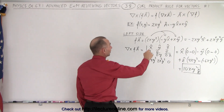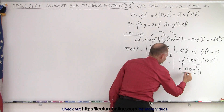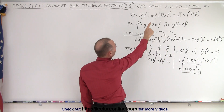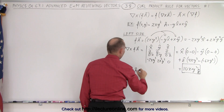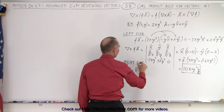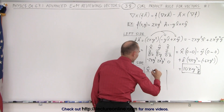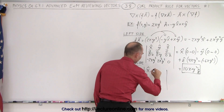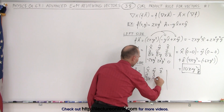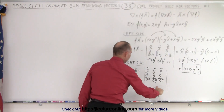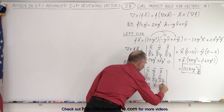Now working on the right side using the same function and vector. First, we take the curl of a. The determinant has x, y, z unit vectors in the first row; partials with respect to x, y, z in the second row; and the components of a — minus y, plus x, and 0 — in the bottom row.